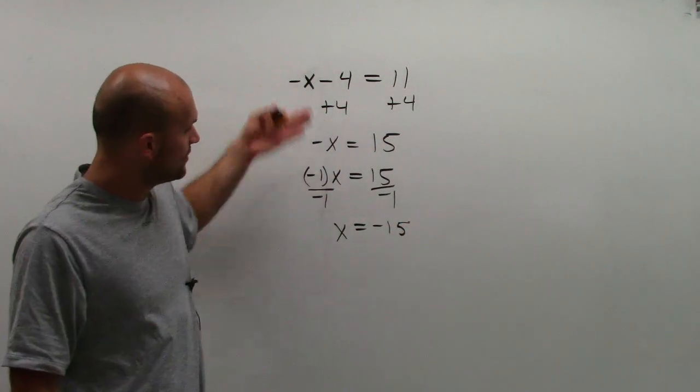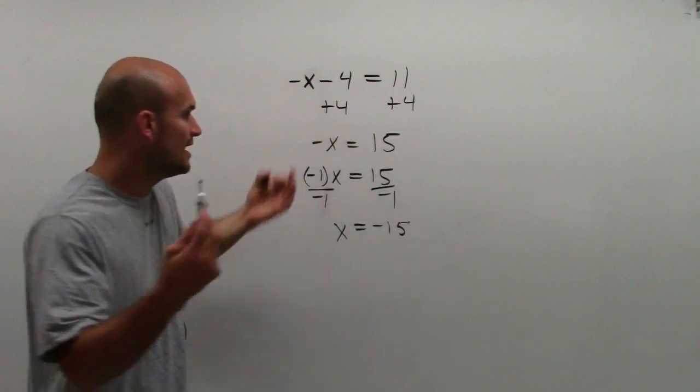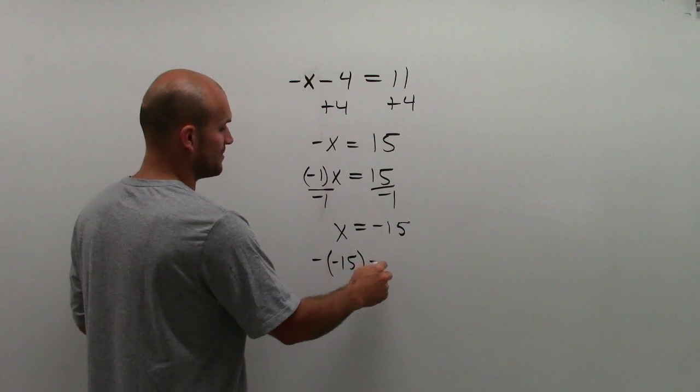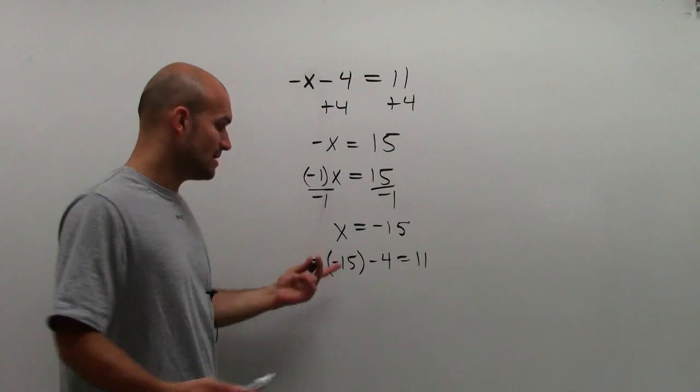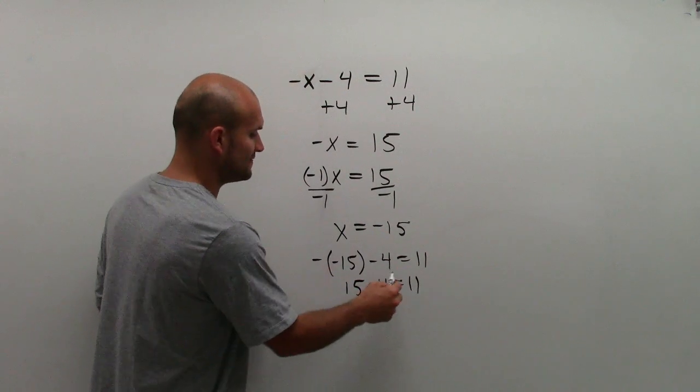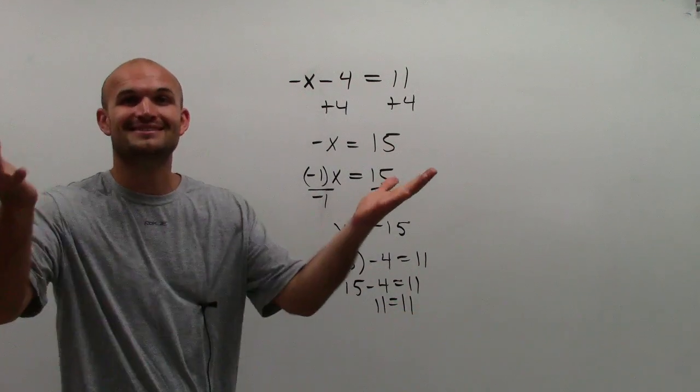So therefore, the value of x that makes this equation true is negative 15. And we can always check our solution. The opposite of a negative number minus 4 equals 11. Well, the opposite of a negative number is positive. So it's 15 minus 4 equals 11. 15 minus 4, 11 equals 11. There you go. Check the statement. It's all good. Done.